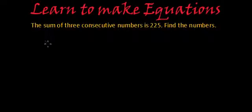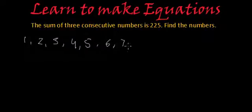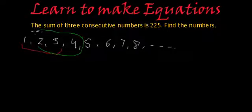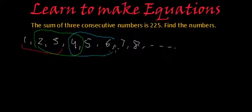So what are consecutive numbers? Suppose if I write natural numbers from the starting: six, seven, eight, and so on. Then these three numbers are consecutive. The numbers which appear one after another without any gap are called consecutive numbers. Similarly, four, five, six will also be consecutive numbers, and six, seven, eight are also consecutive numbers.